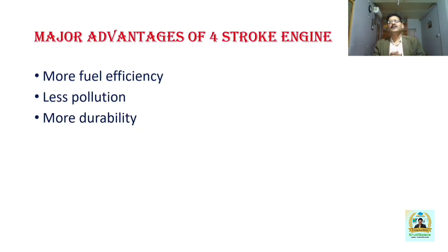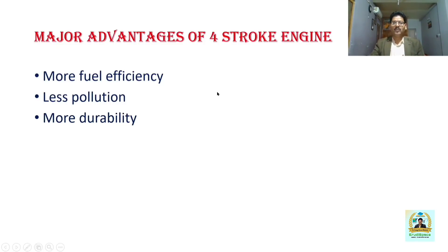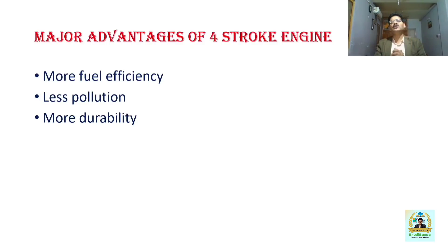Now we will discuss some of the major advantages of the four-stroke SI engine in comparison with the two-stroke SI engine. It provides more fuel efficiency. Why? Because there is a separate stroke for exhaust. As a result, comparatively more utilization of fuel takes place in the four-stroke engine. The probability of fuel leaving the system without being burnt is very less, so it gives higher fuel efficiency compared to the two-stroke engine.